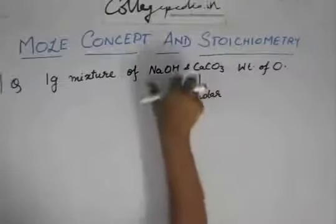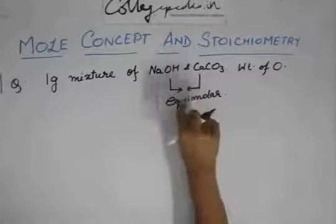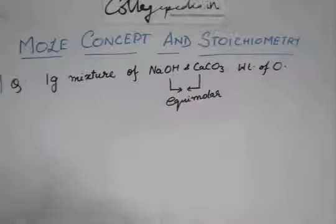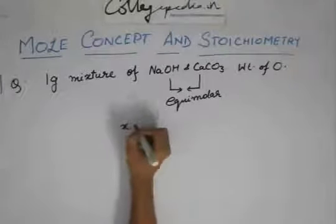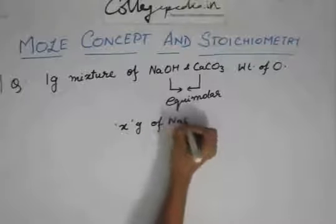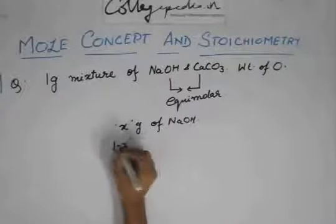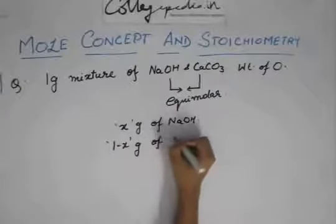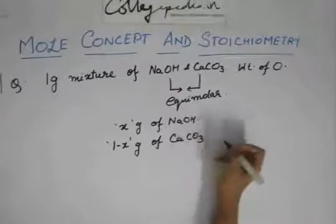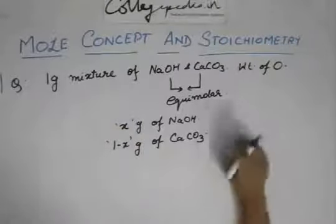First, you need to find how much weight of each compound is present. You have been given that the total weight of the mixture is one gram. If you take x grams of NaOH, then automatically one minus x grams of CaCO3 would be present, because the total weight of the mixture is one gram.